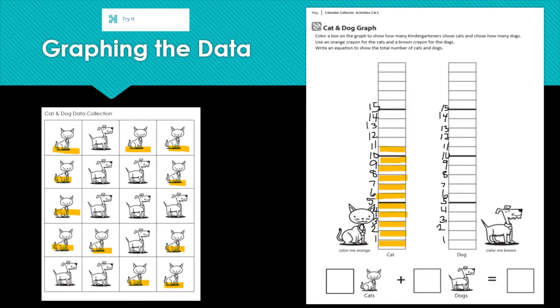And now we need to color in dogs. I'm going to use the black because I don't have a brown. So that's a dog, 2, 3, 4, 5, 6, 7, 8, 9. Let's count again. 1, 2, 3, 4, 5, 6, 7, 8, 9. So now we've created our bar graphs to graph how many cats and how many dogs.